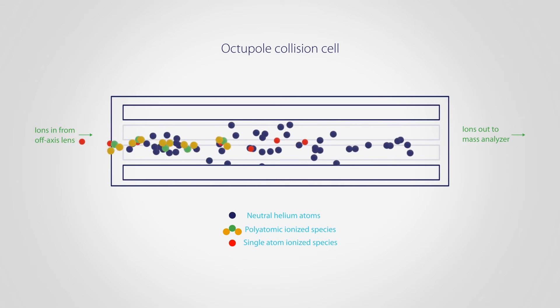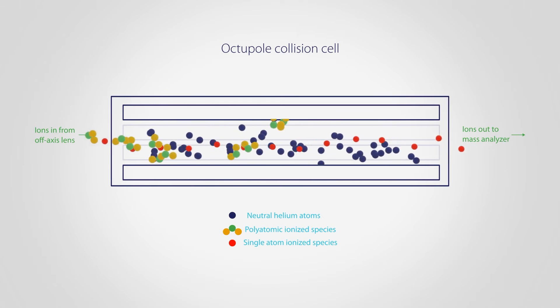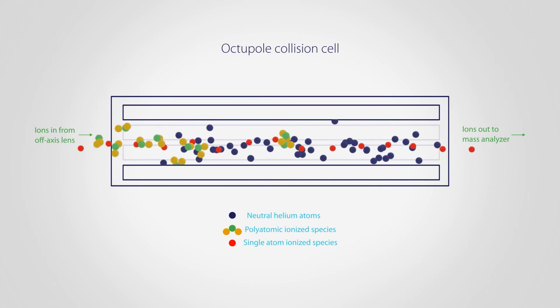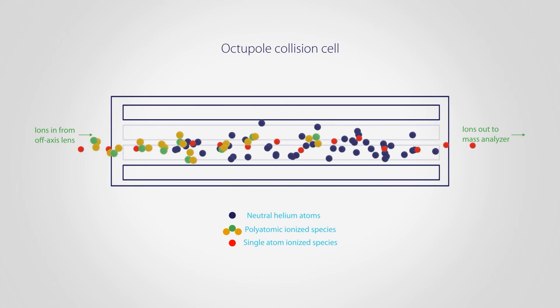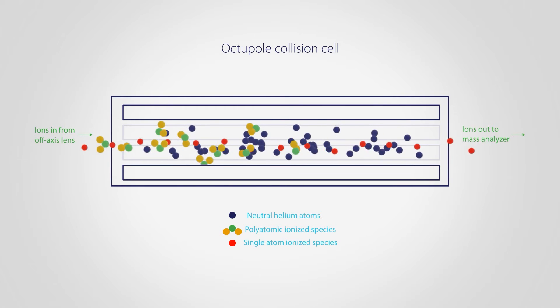The polyatomics thus lose a greater amount of kinetic energy than the monoatomic ions. A small repulsive electric field is applied at the exit of the collision cell as a barrier. Only monoatomic ions have enough kinetic energy to overcome the barrier, while the slow polyatomics are prevented from traveling further.